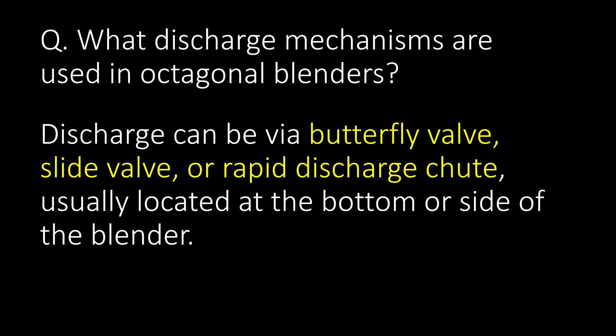What discharge mechanisms are used in octagonal blenders? Discharge can be via butterfly valve, slide valve, or rapid discharge spout, usually located at the bottom or side of the blender.